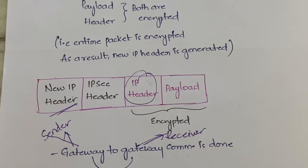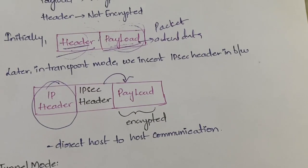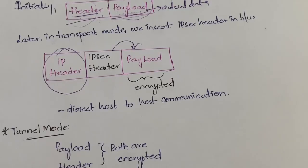In tunnel mode you encrypt both header and payload, whereas in transport mode you encrypt only the payload. This is about the IPSec security modes and the security association parameters.